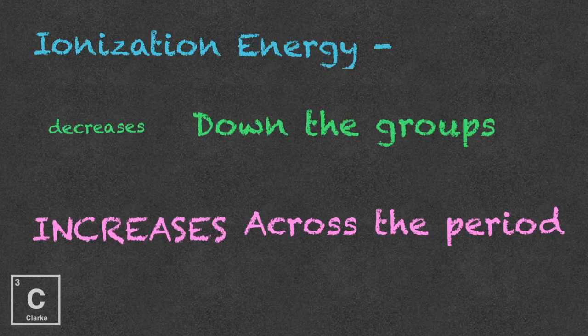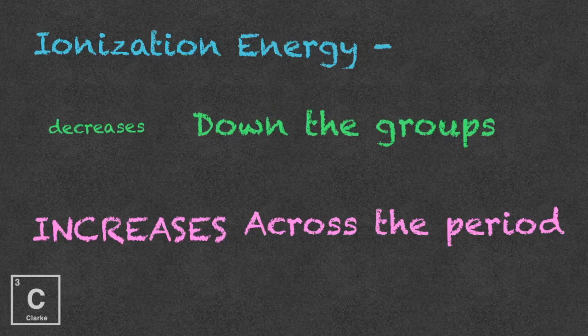Let's also remember that trend. For ionization energy, as we move down the group, ionization energy is going to decrease. Now as we're going across the period, ionization energy is going to increase. So the overall trend for ionization energy is to decrease down the group and increase across the period.